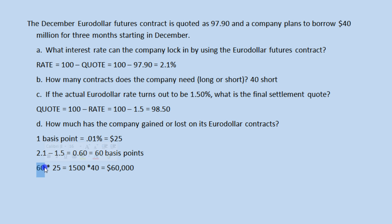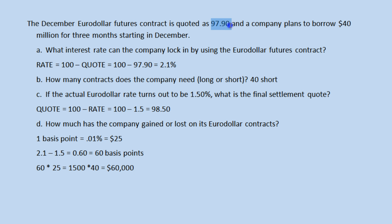So we have a 60 basis point change times $25 per basis point times 40 contracts, which equals $60,000. We do need to know whether this is a gain or a loss. The price of the contract has gone from 97.90 to 98.50 — it has increased. The company is short, and when you are short a contract that has increased in price, that is a loss.